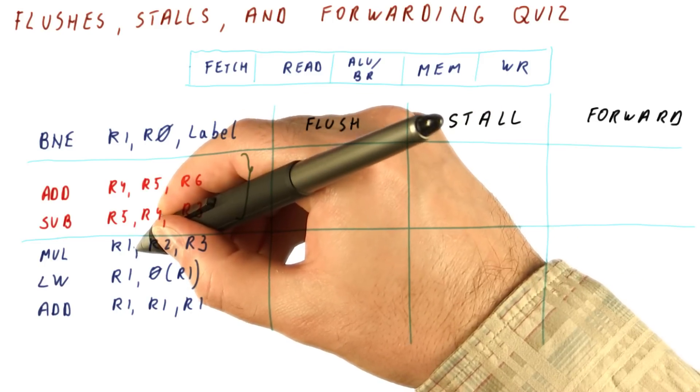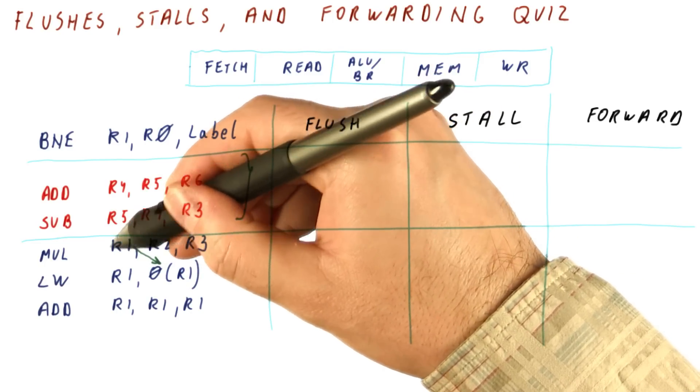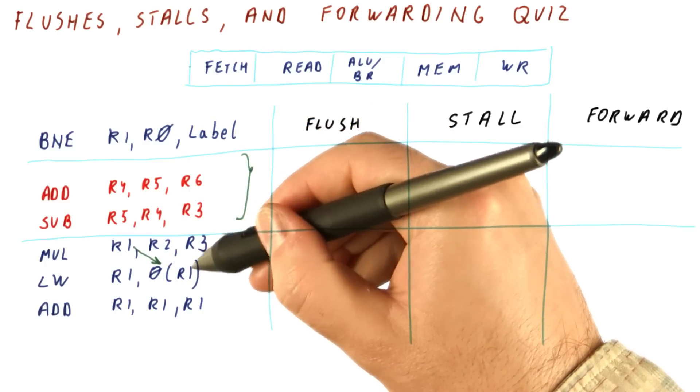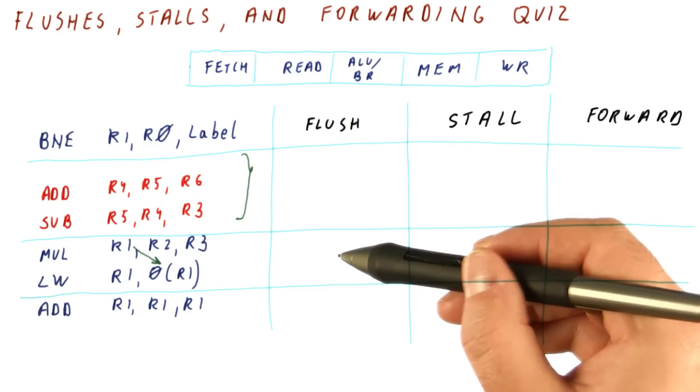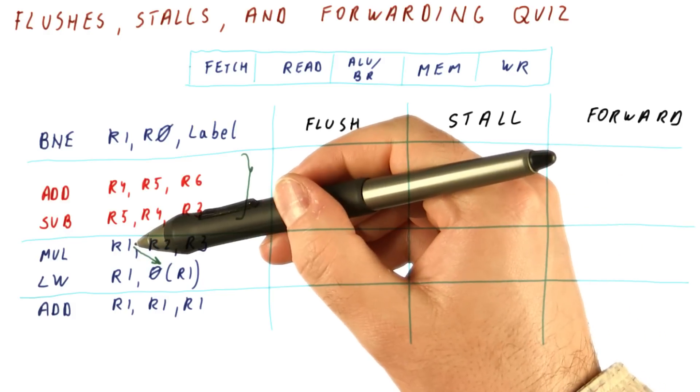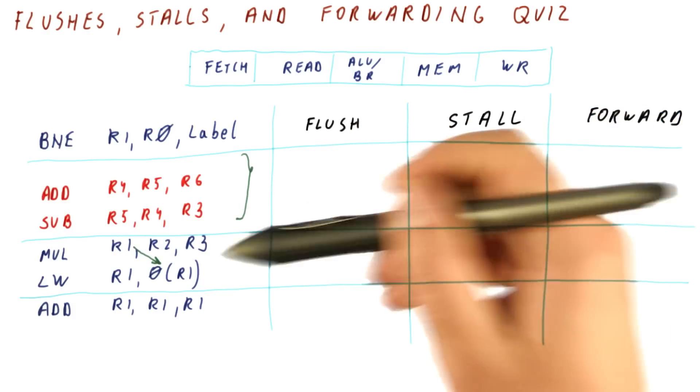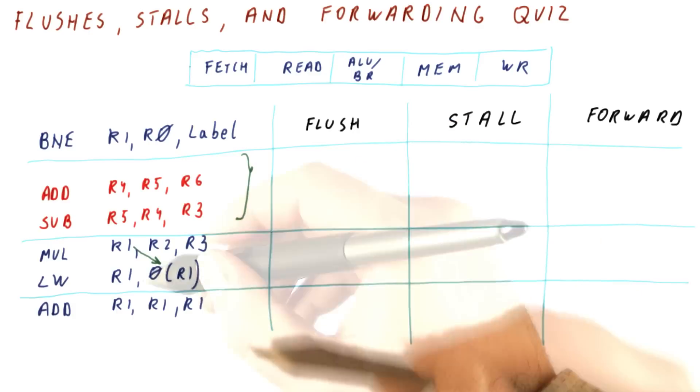Next, we have a data dependence where the multiply is producing the R1 result, and the load needs to use that as the memory address. Put a check mark in each of these three boxes, depending on whether we need to flush, stall, or forward the value in this case.